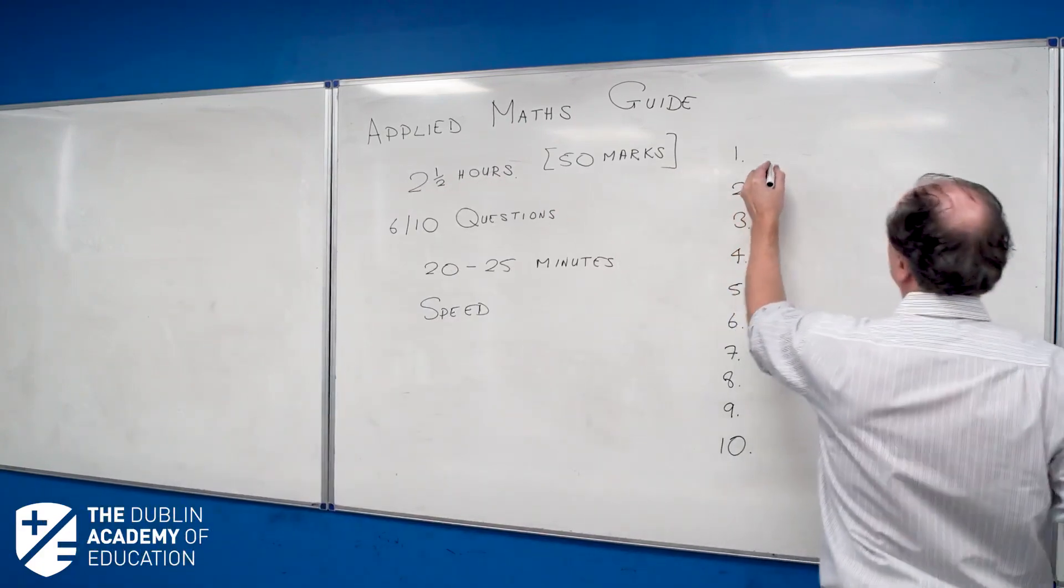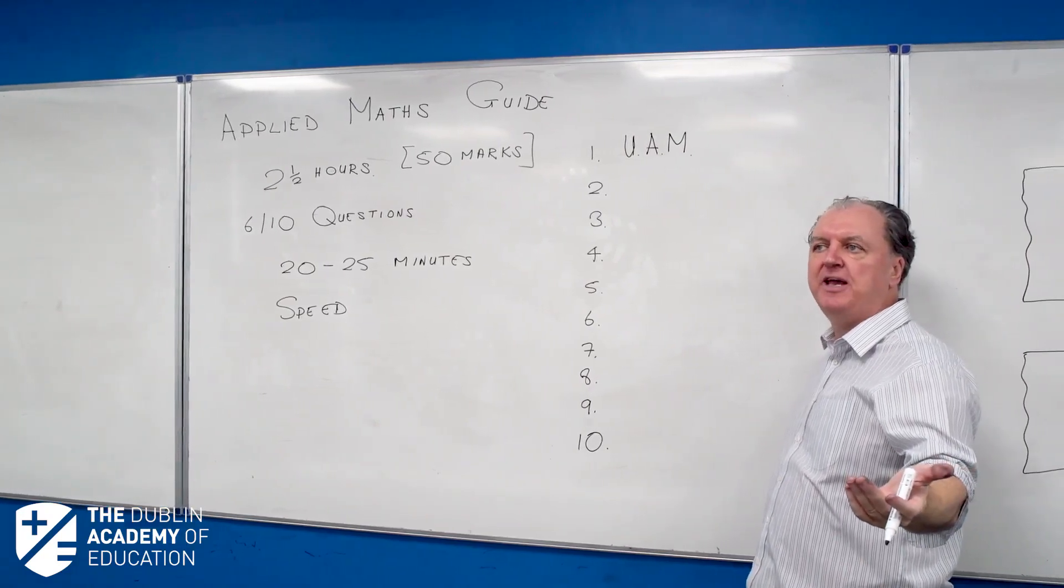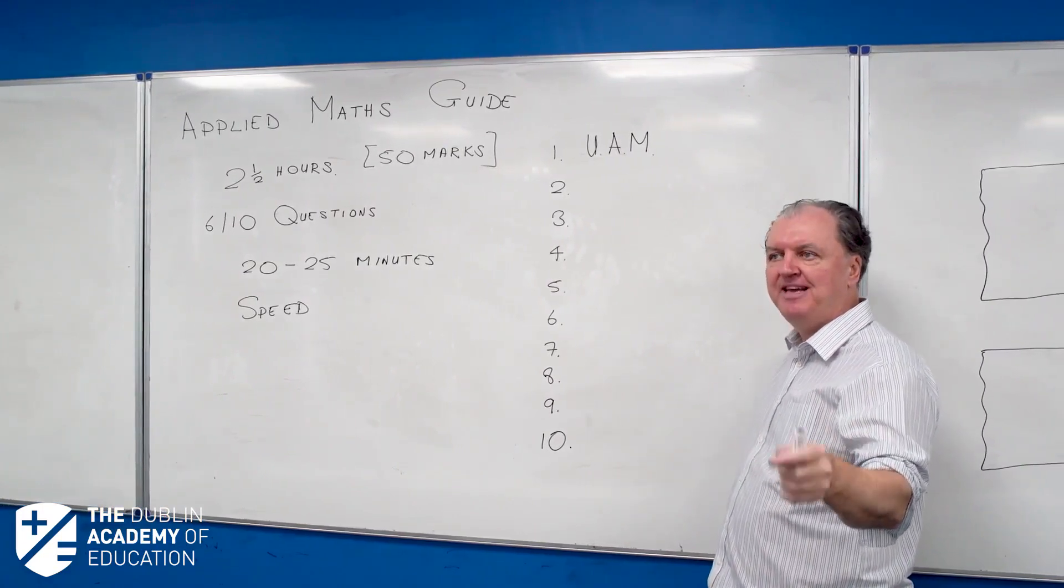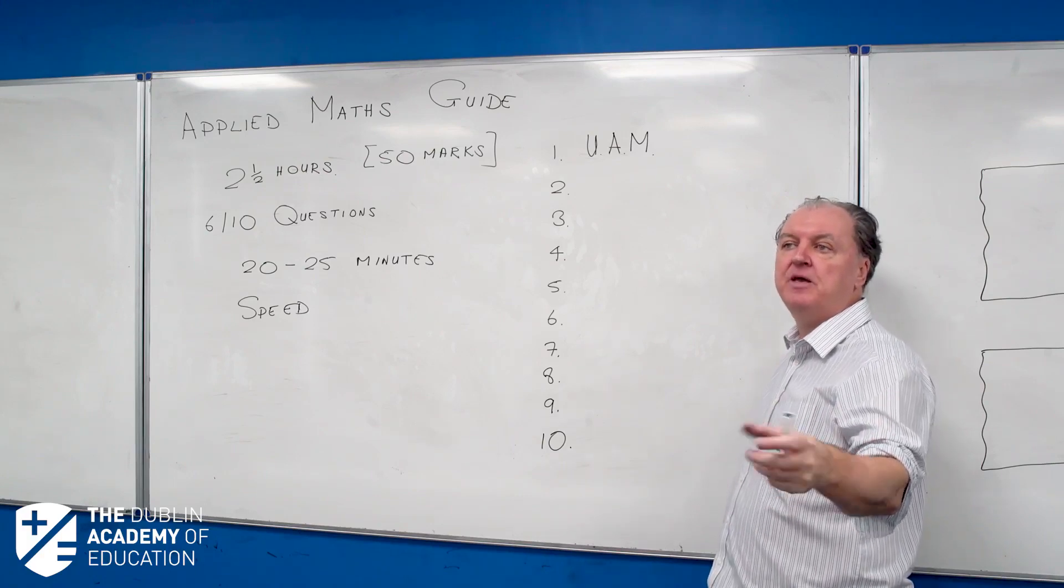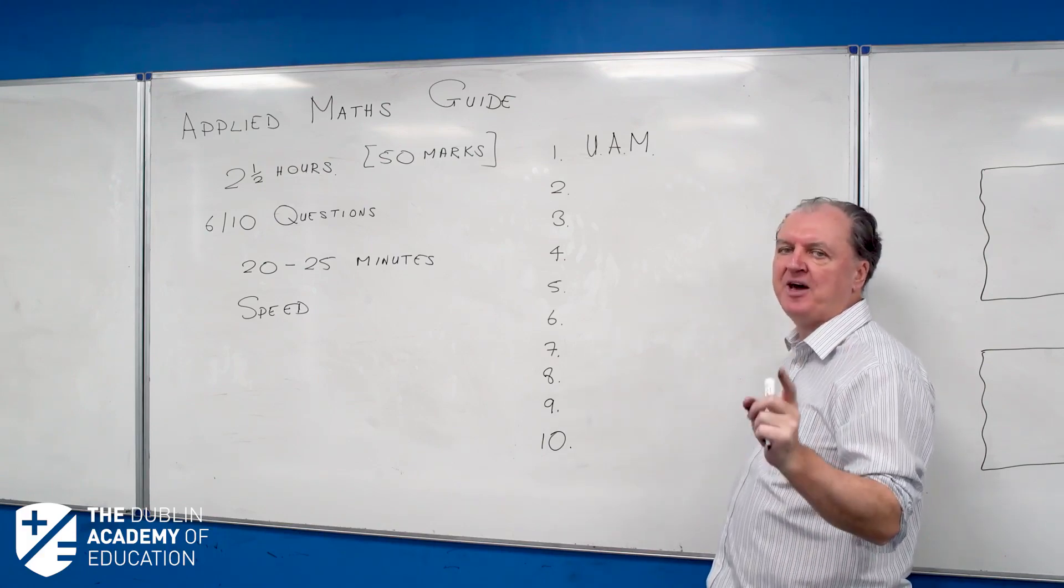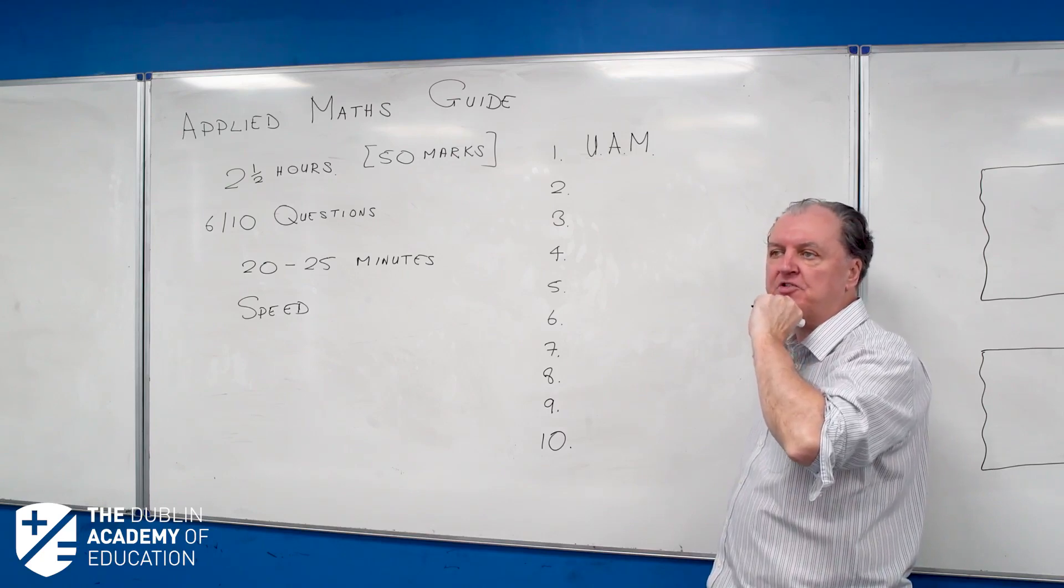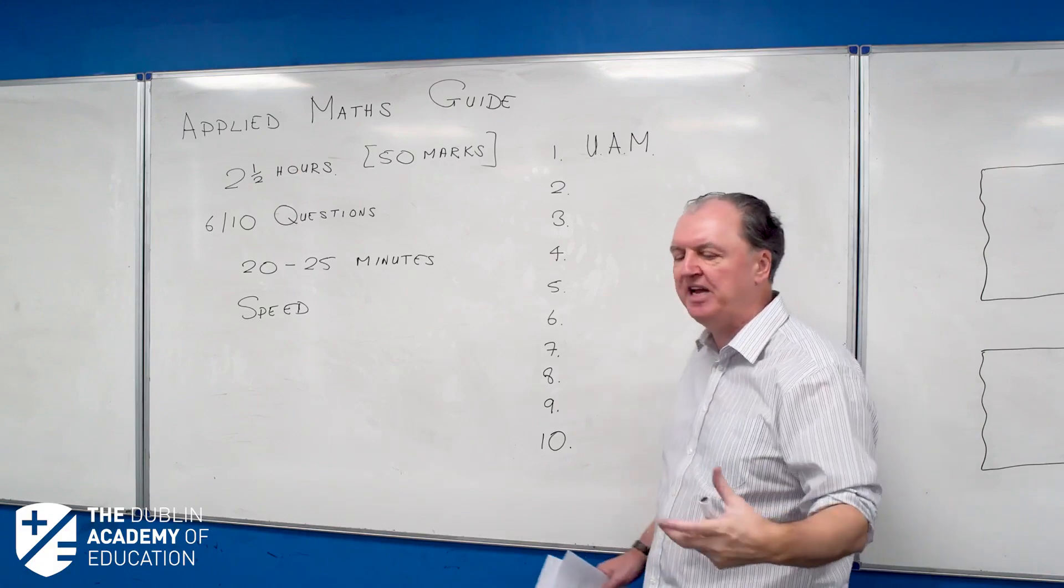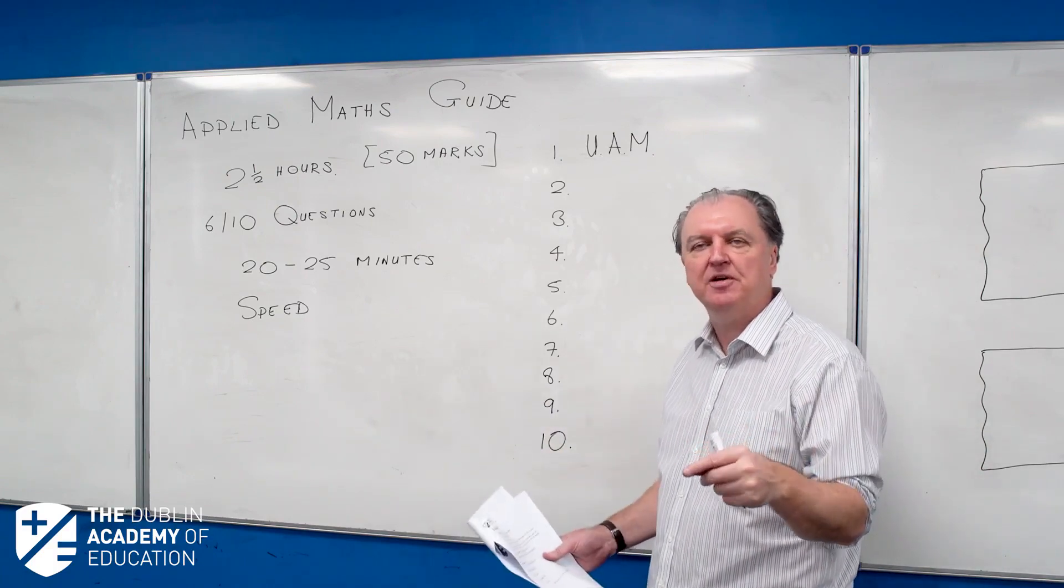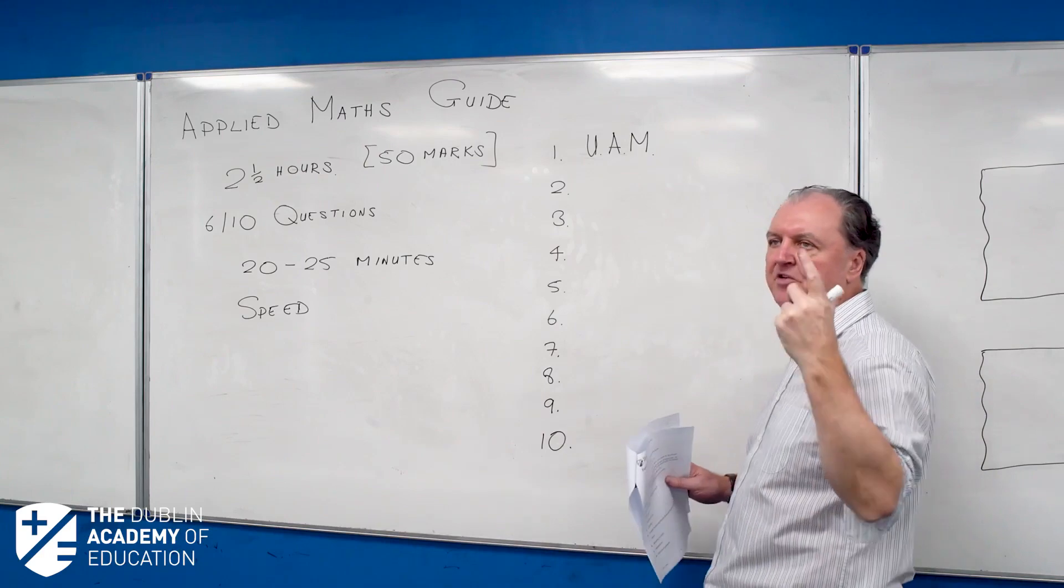The first question is UAM, Uniform Accelerated Motion. That's where you use your equations. Your V equals U plus AT. Your S equals UT plus a half AT squared. Everybody does that question in school because you need those equations for every other topic. But it doesn't necessarily mean you're going to do that question on exam day. I would suggest even though it's question one, you shouldn't do it first. Sometimes it can be a very difficult question involving trains going along tracks and you could end up spending a long time on it. Other years it's quite easy. Last year it was quite difficult. So it's not a question you do first.